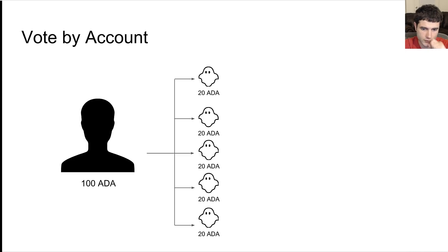If I have 100 ADA in this case for Cardano, I can split up my 100 ADA to five different accounts, they're all actually run by me, each with 20 ADA. Therefore I have five times the amount of voting power.